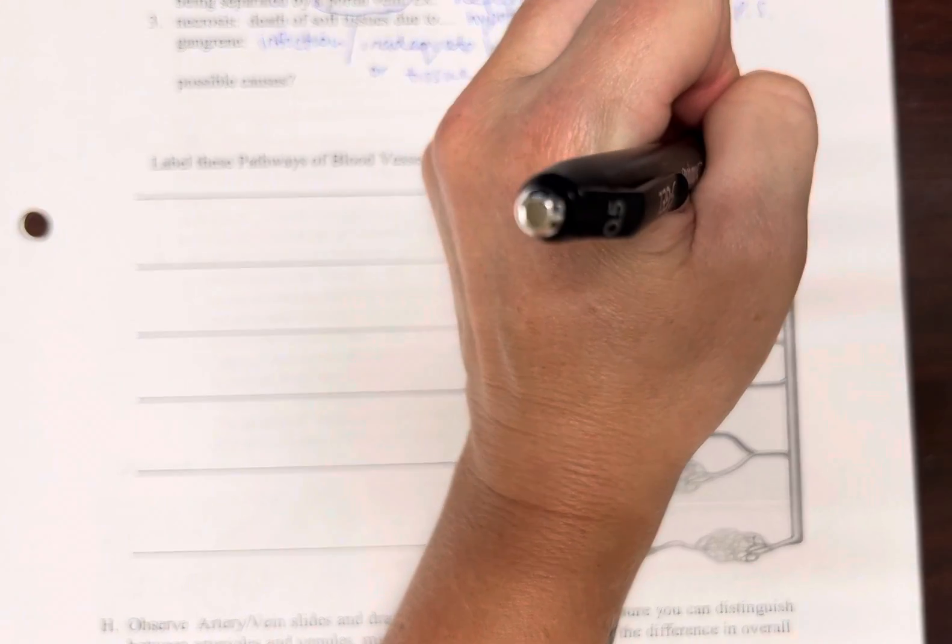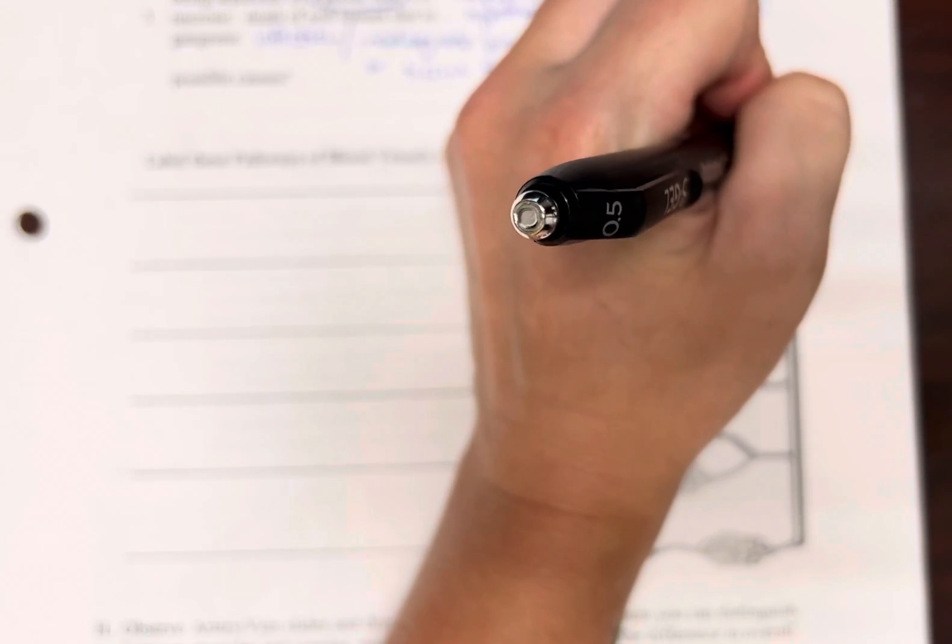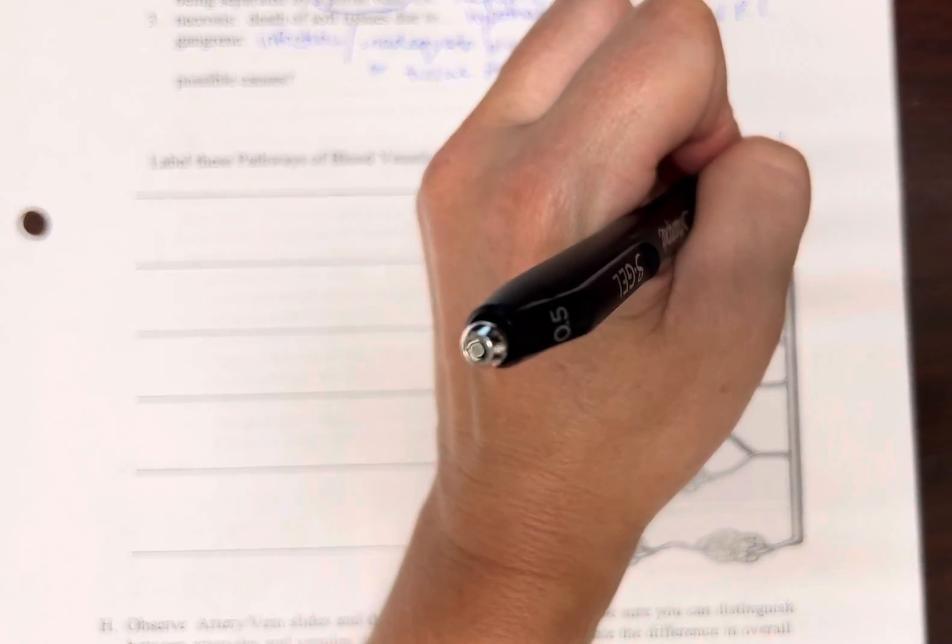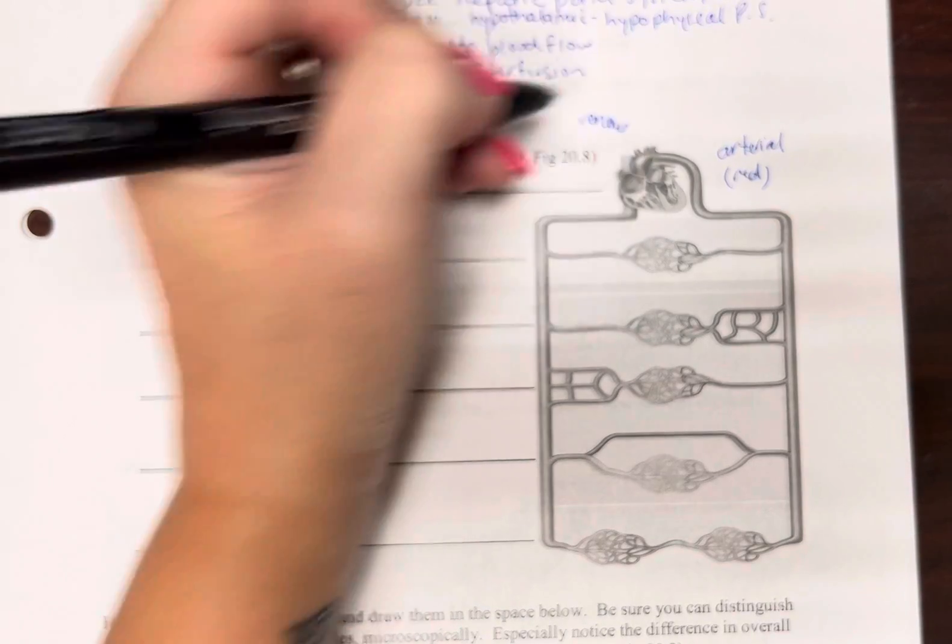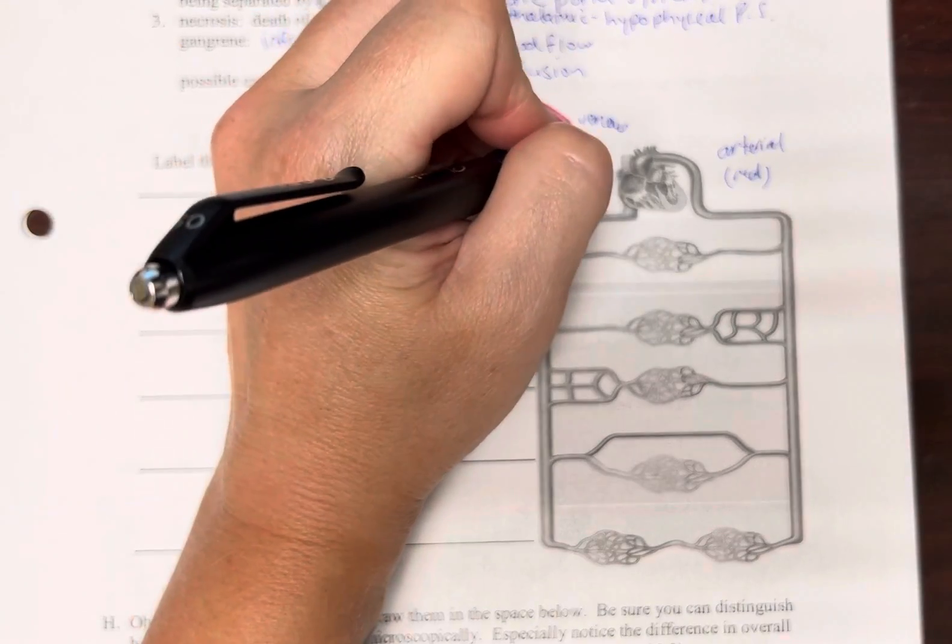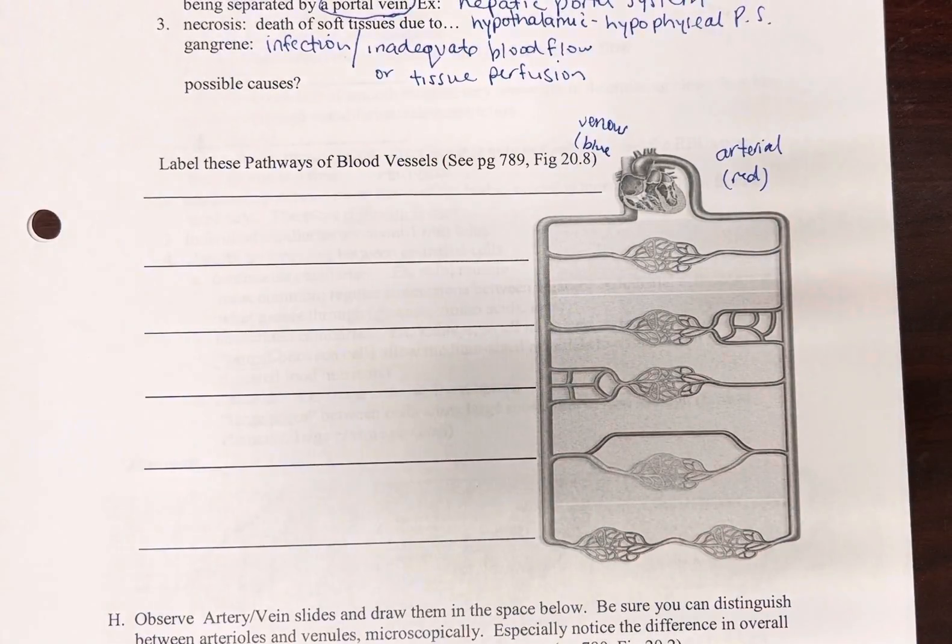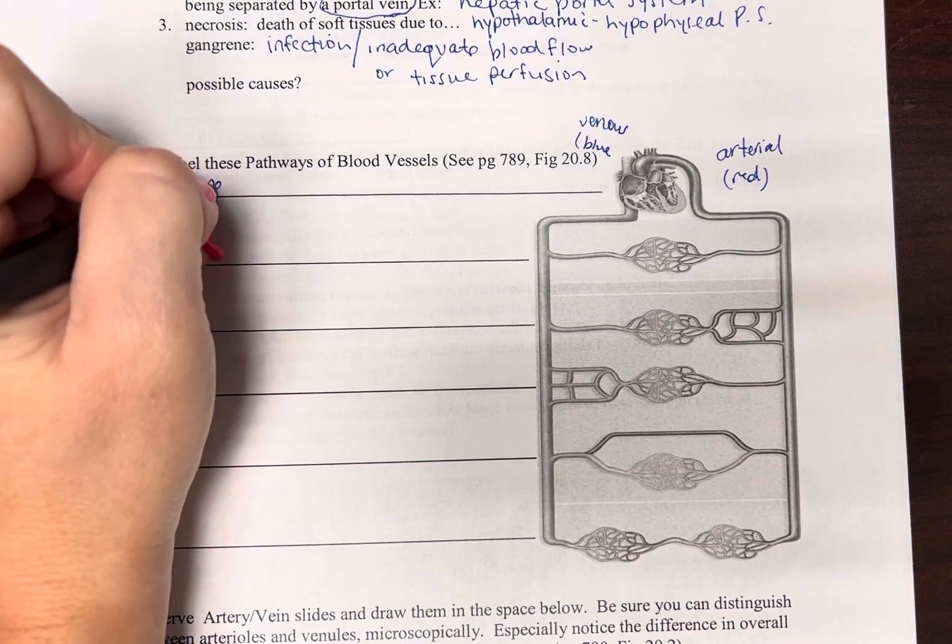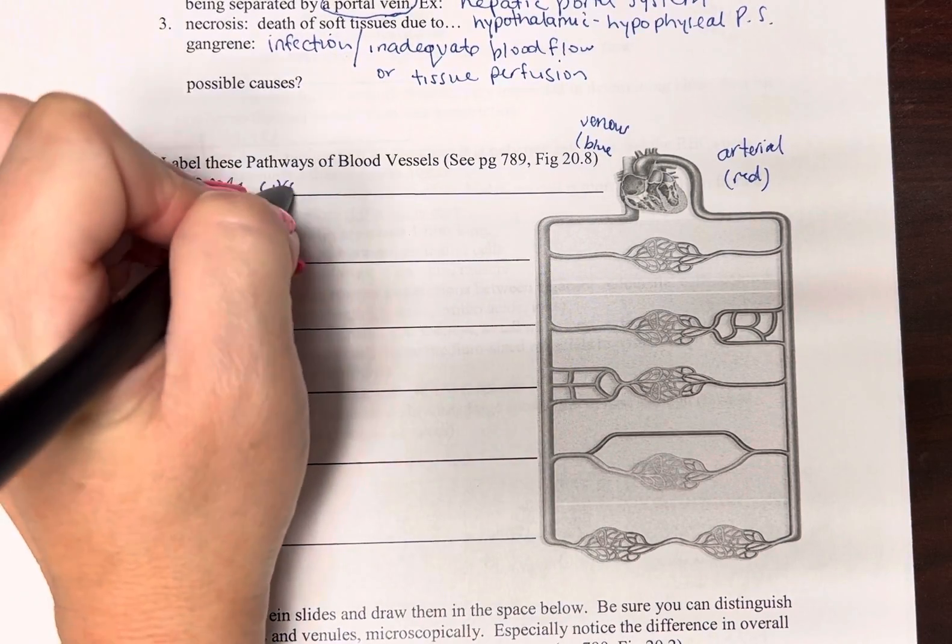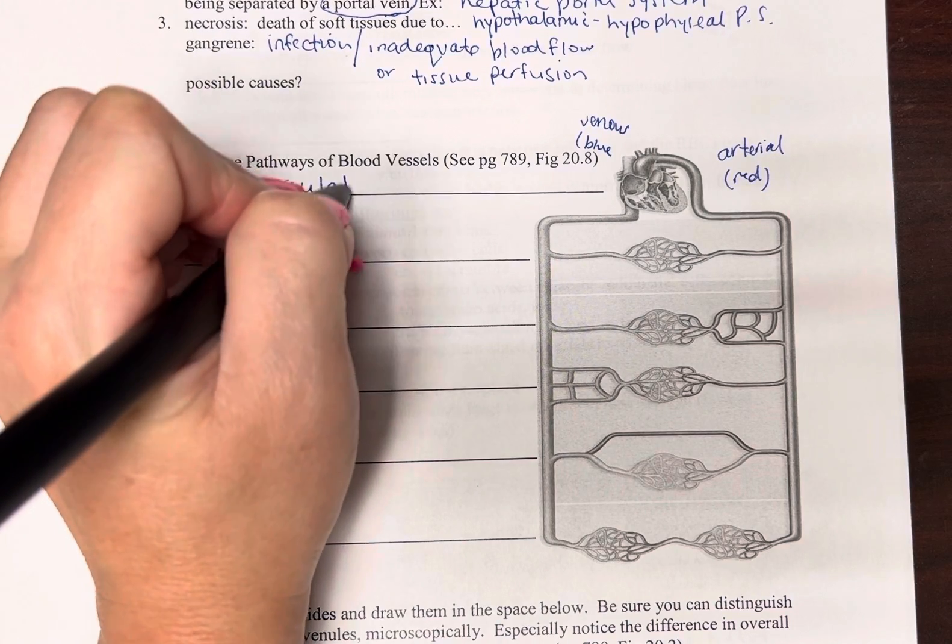So this is going to be different than the capillary bed that we drew. On the other side, this is going to be your arterial in, so this is going to be red. This is going to be the venous side, so it's going to be blue. So first and foremost, you have your coronary circulation. So that's how the heart gets blood to itself.